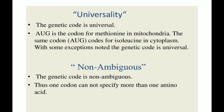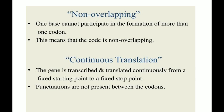The genetic code is universal. AUG is the codon for methionine; in mitochondria the same codon AUG codes for isoleucine in the cytoplasm. With some exceptions noted, the genetic code is universal. It is also non-ambiguous — one codon cannot specify more than one amino acid. It is non-overlapping, meaning one base cannot participate in the formation of more than one codon.